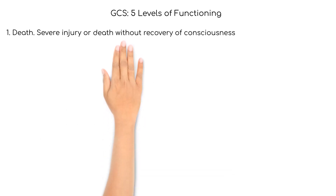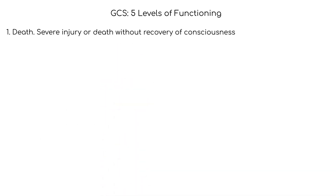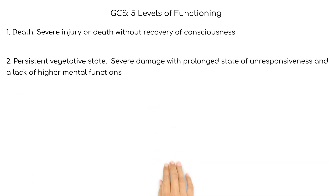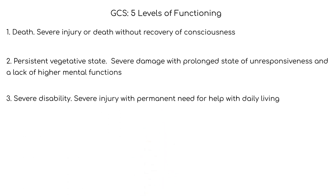The Glasgow Coma Scale includes five levels of functioning. Level one: death — severe injury or death without recovery of consciousness. Level two: persistent vegetative state — severe damage with prolonged state of unresponsiveness and a lack of higher mental functions. Level three: severe disability — severe injury with permanent need for help with daily living.